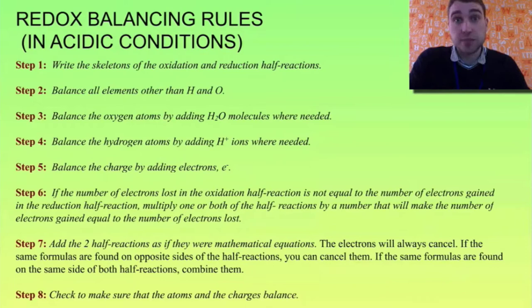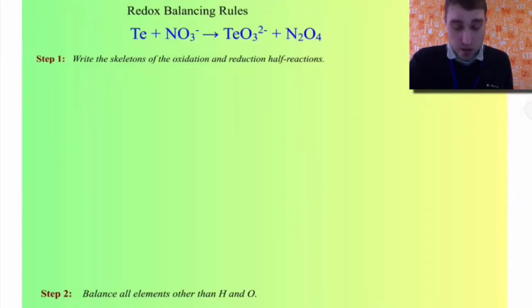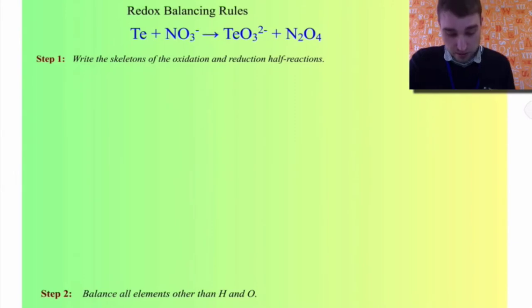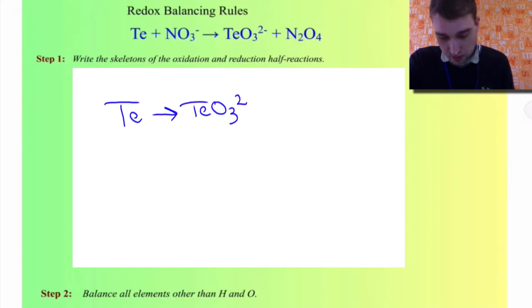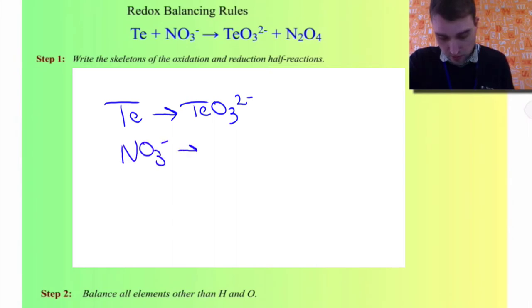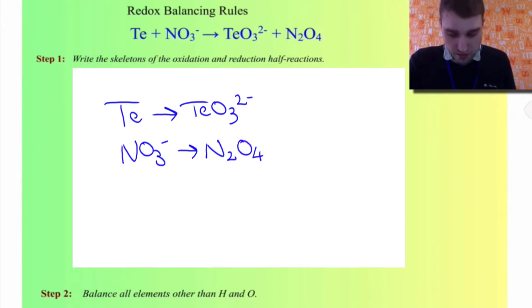Let's do an example. We're going to balance this equation. The first step is to write the oxidation and reduction half equations. Starting with technetium: TcO₃²⁻ on one side, and NO₃⁻ going to N₂O₄ on the other. Now we've written the half equations, we need to balance for everything other than oxygen and hydrogen.